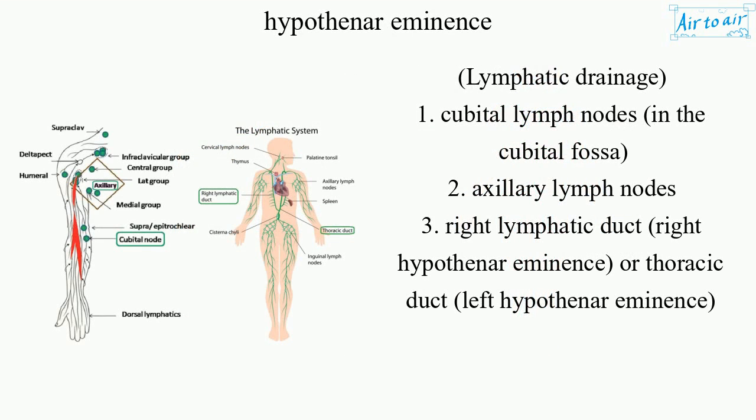Lymphatic Drainage: 1. Cubital Lymph Nodes in the Cubital Fossa. 2. Axillary Lymph Nodes. Right Lymphatic Duct for the right hypothenar eminence, or thoracic duct for the left hypothenar eminence.